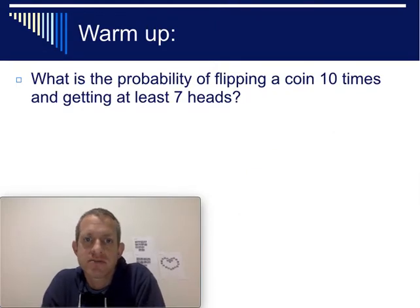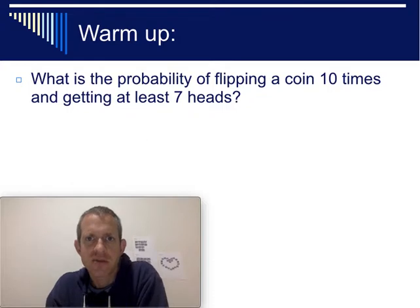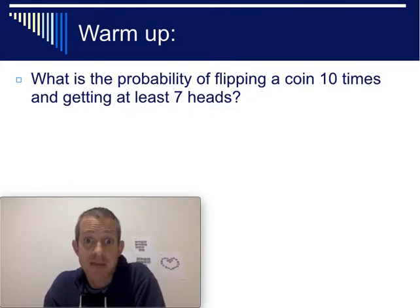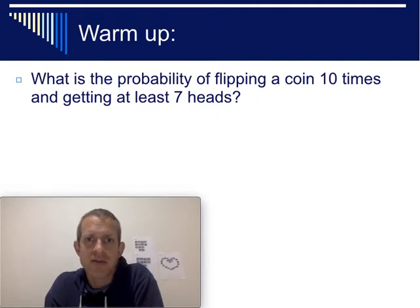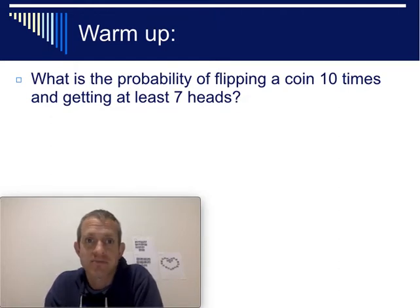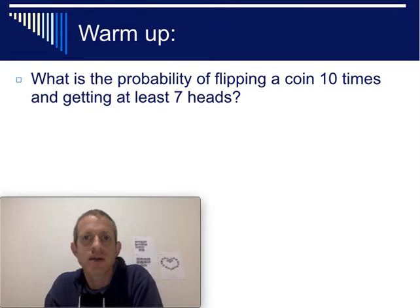When I teach this in a classroom setting, what I usually do is start off by giving everybody a coin and saying, I need you to flip it ten times and I want you to count how many heads you get. We gather all that data and look at what's the probability that somebody gets at least seven heads. Sometimes it's fun to guess ahead of time, but we're going to be able to calculate that sort of question.